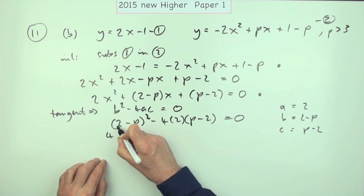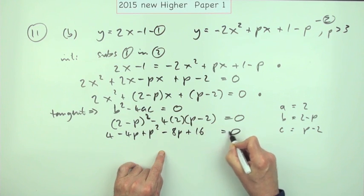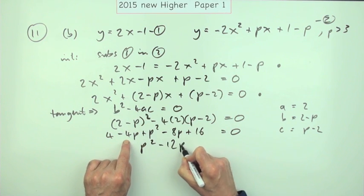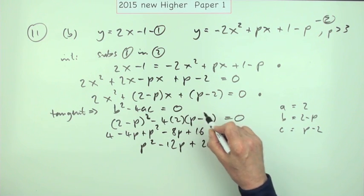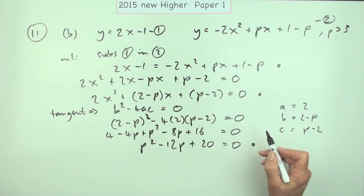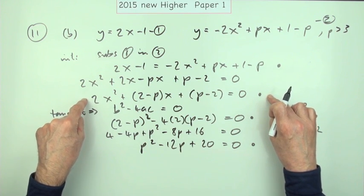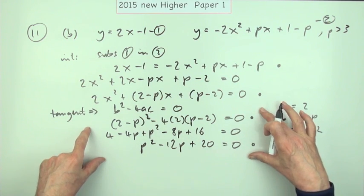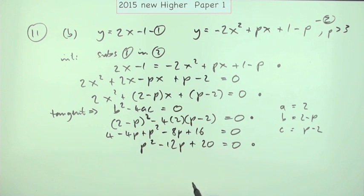Tidying this up: square the bracket — square the first, twice the product, square the last — and for the other term, minus 8 times that plus 16 equals 0. This simplifies to p squared minus 12p plus 20 equals 0. The second mark comes from correctly simplifying the discriminant equation. That's four out of six marks: two for creating the quadratic in x for the intersection, and two for the discriminant condition for tangency.